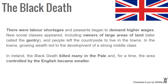New social classes appeared, including owners of large areas of land, later called the gentry, and people left the countryside to live in the towns. In the towns, growing wealth led to the development of a strong middle class. In Ireland, the Black Death killed many in the Pale and, for a time, the area controlled by the English became smaller.